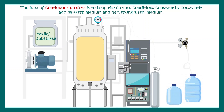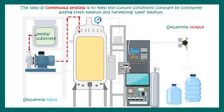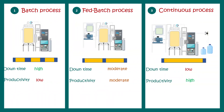When we talk about bioreactors, we should also understand the operation regime by which they can work. One such regime is a continuous process, in which you enter the media or substrate and through another outlet, you take out the product continuously. Using a pump, you pump the media into the reaction vessel and take out the product over time. This allows the reactor to run for a very long time and give fruitful products. There are many other operation regimes, but the continuous process is the most fruitful one.